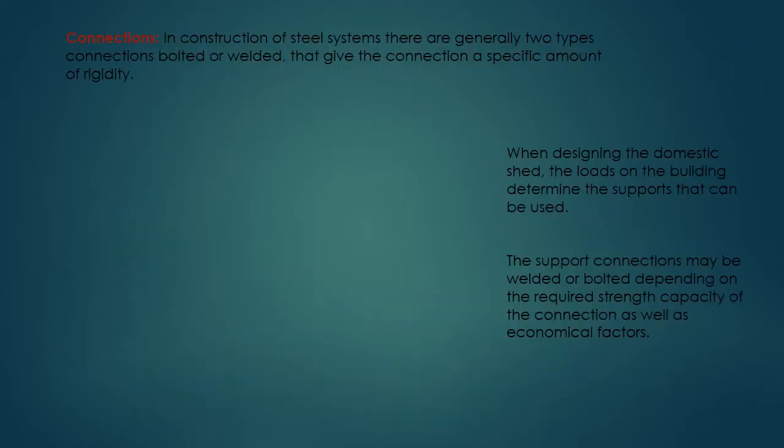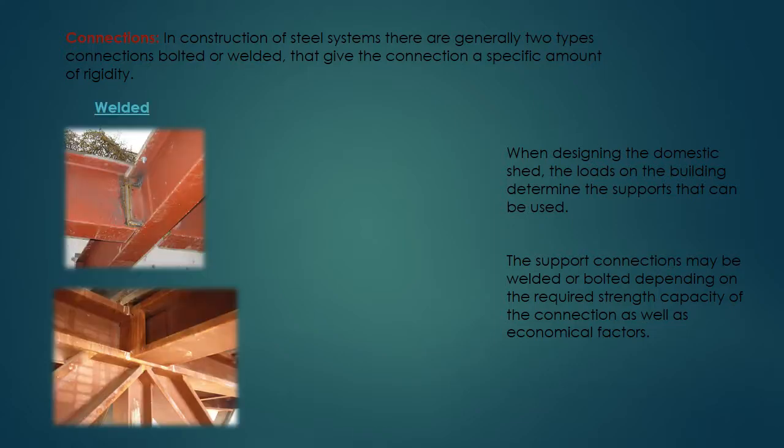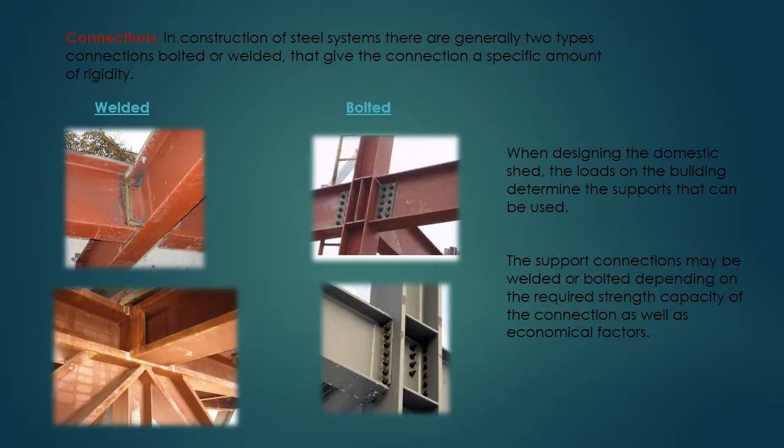In construction of steel systems, there are generally two types of connections, bolted or welded, that give the connection a specific amount of rigidity. When designing the domestic shed, the loads on the building determine the supports that can be used. The support connections may be welded or bolted depending on the required strength capacity of the connection as well as economical factors. As seen on the left we have welded connections, and as seen on the right we have bolted connections.